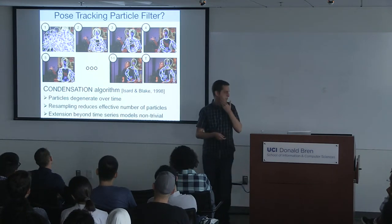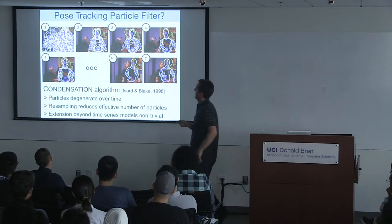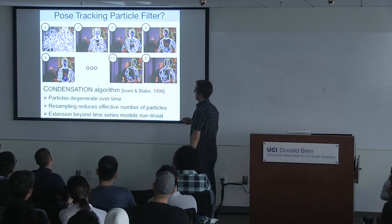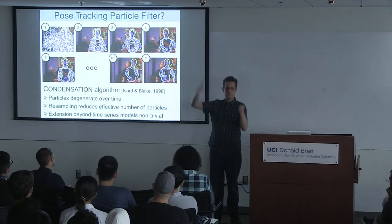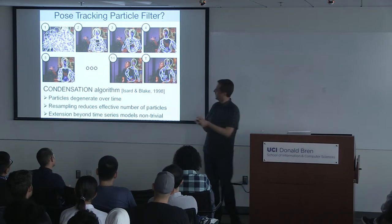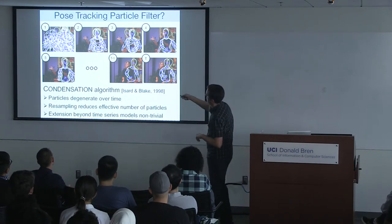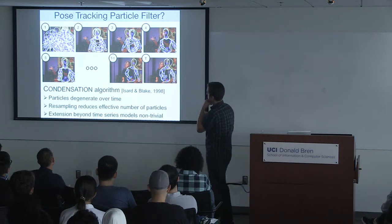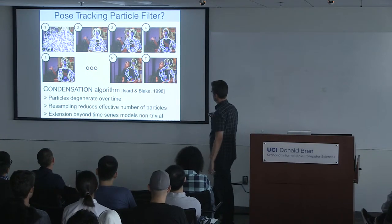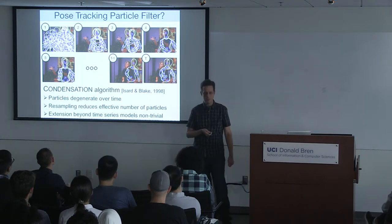For those with background in computer vision, one classic method is the particle filter, which tracks whole-body pose by starting with a set of hypotheses, using a dynamics model to predict where limbs moved from frame to frame, evaluating those guesses against the image, and resampling. However, as shown in a real run: you start off okay, but over time you get degeneracy where all particles concentrate on a terrible solution. This is a real problem with classic stochastic sampling methods.